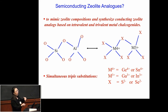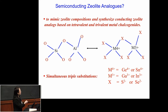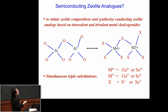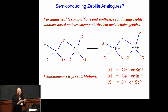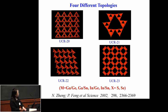What we try to do is mimic the zeolite chemical composition but introduce semiconductivity into it. Conceptually, we perform a triple substitution: replace silicon with germanium or tin, replace aluminum with gallium or indium, and replace oxygen with sulfur or selenide, to synthesize a semiconducting porous material.